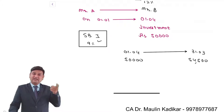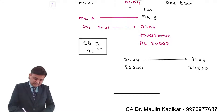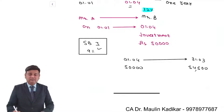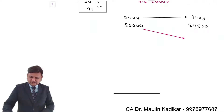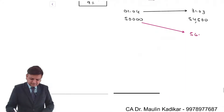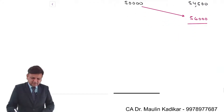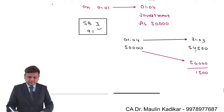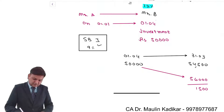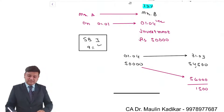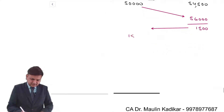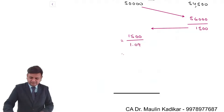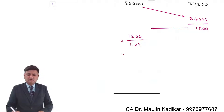Now Mr. A had already entered into the Forward Rate Agreement with Mr. B, where the committed rate of interest was 12%. So ₹50,000 at 12% should become ₹56,000. In a way, there is a loss to Mr. A of ₹1,500. So what will happen? On 1st of April itself, Mr. B will compensate Mr. A — how much? The present value of ₹1,500, which is 1,500 divided by 1.09, using the current rate of interest. That comes to ₹1,376.15.